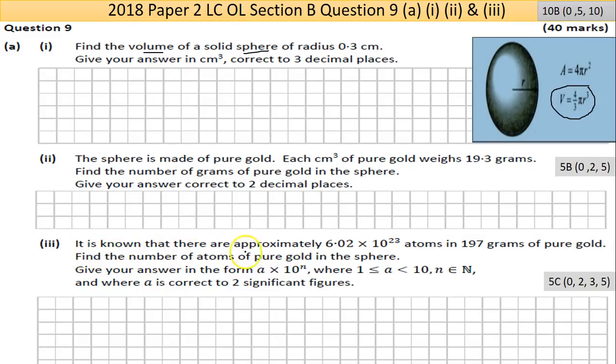Part three says it is known that there are approximately 6.02 × 10²³ atoms - that's Avogadro's number in chemistry, the number of particles in a mole - in 197 grams of pure gold. Basically, if you're into chemistry, that's a mole of gold. Find the number of atoms of pure gold in the sphere, which is much less than that at 2.18 grams.